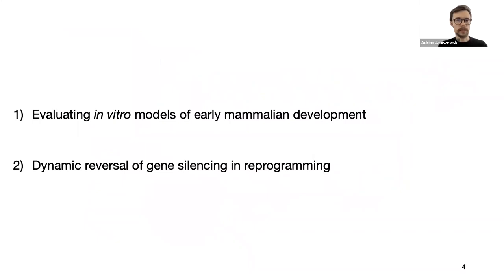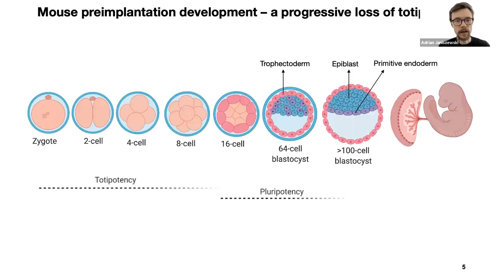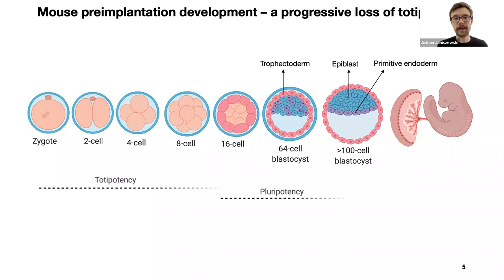Today I will tell you about two research projects that I have been involved in. The first one is about totipotency — we ask, can we capture and maintain totipotent cells in vitro, and how should we even judge and evaluate totipotency? In the second project, we set out to better understand how chromatin silencing is erased, and here we try to identify which factors and chromatin processes might mediate and which might oppose chromatin activation. Here you can see early mouse pre-implantation development. It starts from a single totipotent cell. Totipotency is the ability of a cell to give rise to all cells of the conceptus, both embryonic tissues, which will give rise to the embryo proper, as well as extra-embryonic tissues such as placenta and the yolk sac. However, already around the 16-cell stage, totipotency is lost.